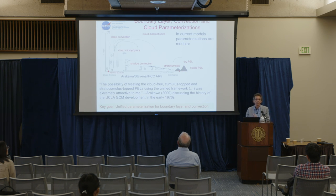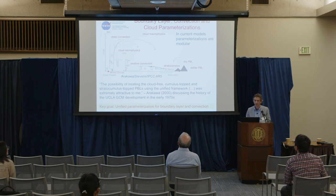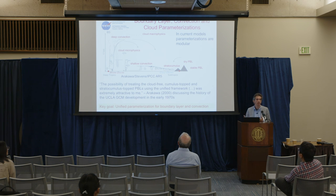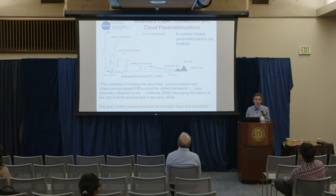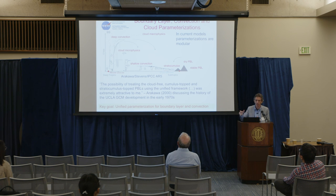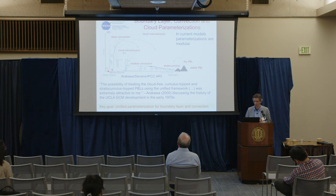When we've tried over the last five decades to represent these different physical processes in weather and climate models, we do it in a very modular way. There are several very good reasons why they're very modular, because historically these communities have sort of lived a little bit apart from each other and each has developed its own different module. It's also because the problem is remarkably complex, so bringing it all together is a real challenge.